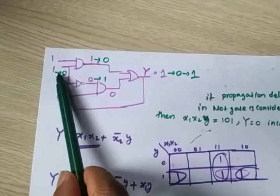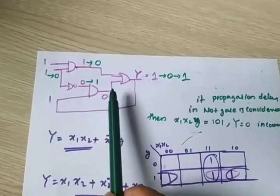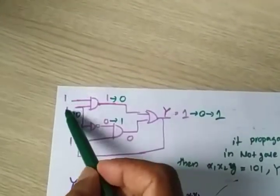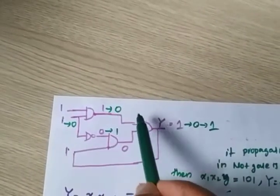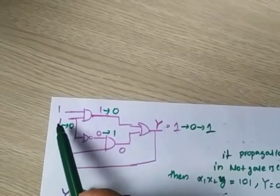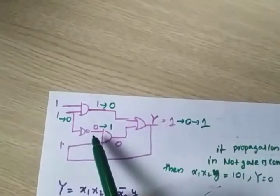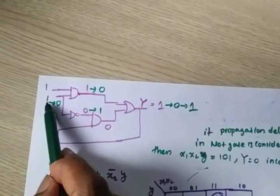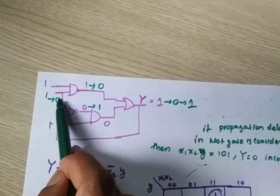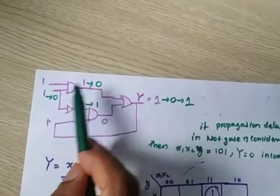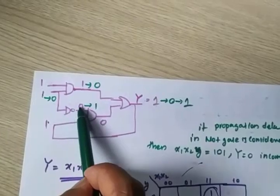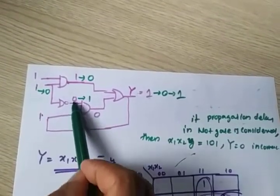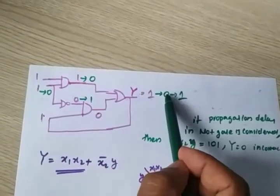Initially giving 1,1,1: x1=1, x2=1, y=1, output is 1. Now I change x2 from 1 to 0. Since there is no propagation delay at this gate, immediately x1·x2 = 1·0 = 0. But x2bar·y still has propagation delay — it remains 0 momentarily. So output = 0 plus 0 = 0, but we are expecting output 1.